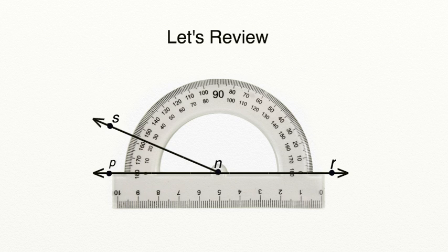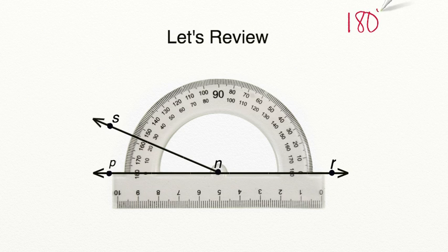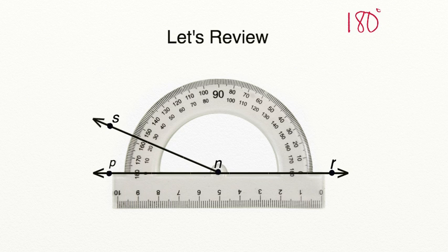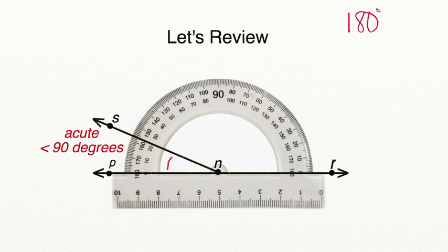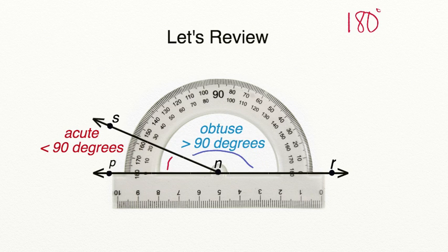Let's take a moment to review what you have learned in today's lesson. A straight line has a measurement of 180 degrees, so whenever you're adding the sum of the angles on a straight line, it should always equal 180 degrees. An acute angle is an angle that measures less than 90 degrees. An obtuse angle is an angle that measures more than 90 degrees. And lastly, a right angle measures exactly 90 degrees and is often shown by having a square in the corner of that angle.